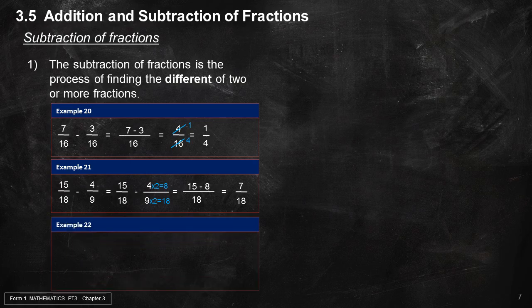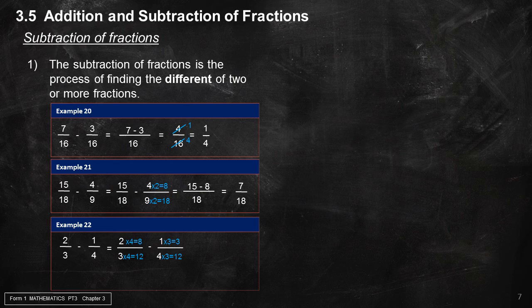Example 22: 2 over 3 minus 1 over 4. Upscale 2 over 3 to 8 over 12, and upscale 1 over 4 to 3 over 12. Then: 8 over 12 minus 3 over 12 equals 5 over 12.